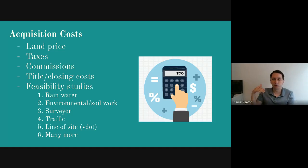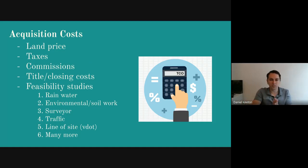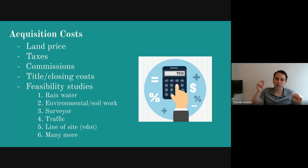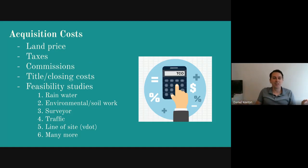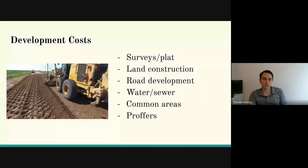Line of sight — doing a study with VDOT and understanding, when you're pulling out of this development, how far can you see to your left and to your right? VDOT won't approve a development unless you can see far enough in either direction, depending on the speed of the road. There are lots of other things in your acquisition costs.